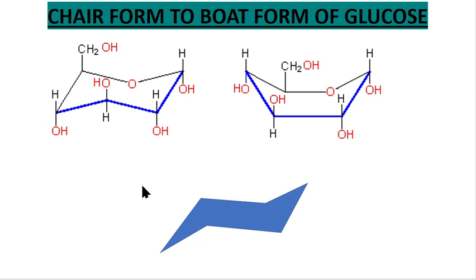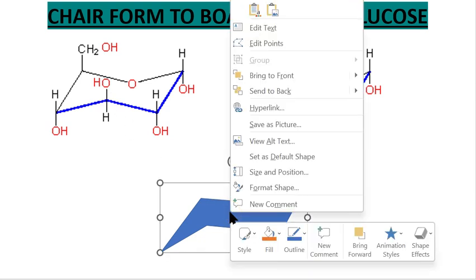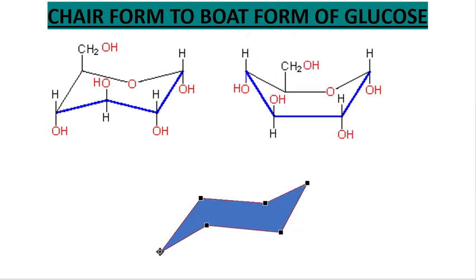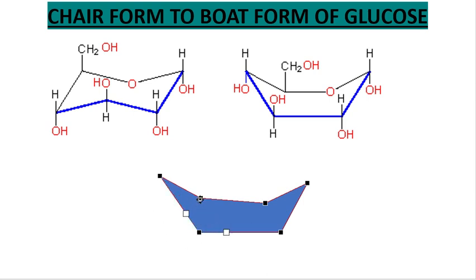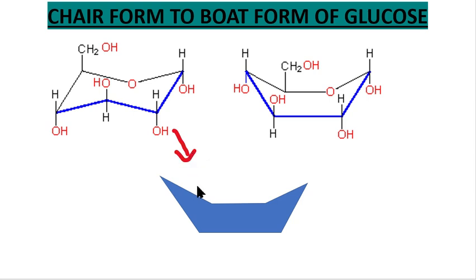For that, we have to change only two positions: carbon 4 and carbon 3. We have to first change carbon 4 upwards and carbon 3 downwards, and then readjust carbon 5. In this way we can convert our cyclohexane structure, or chair form, into the boat form.